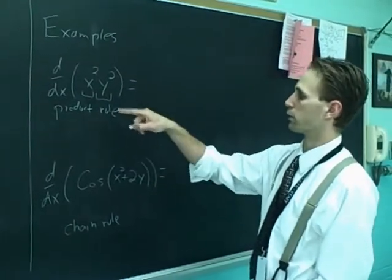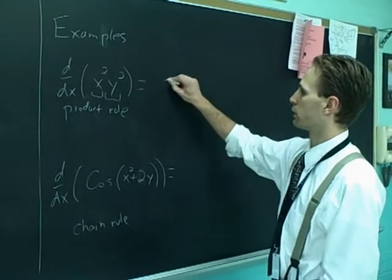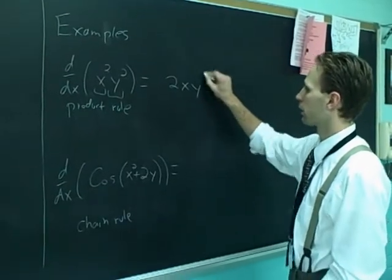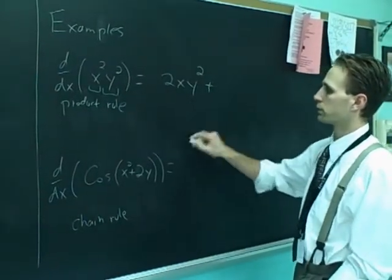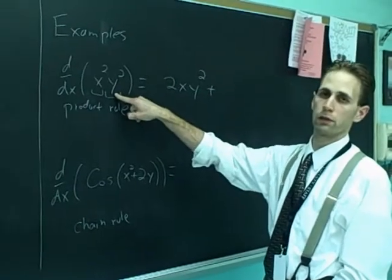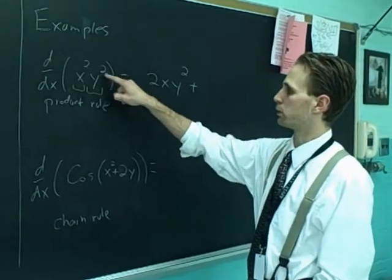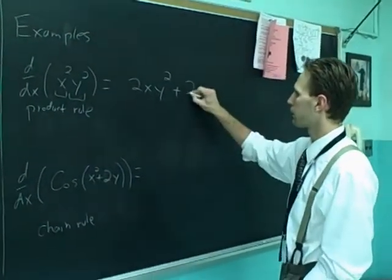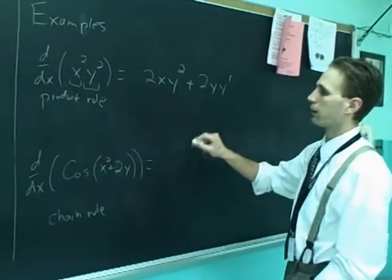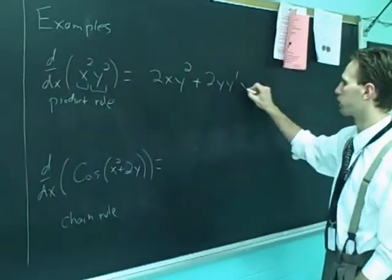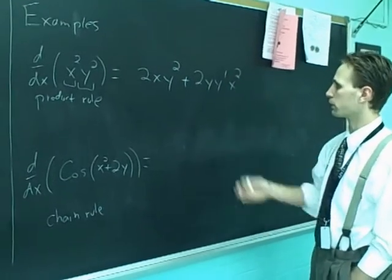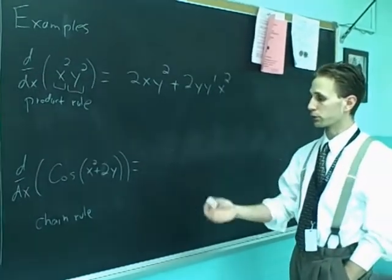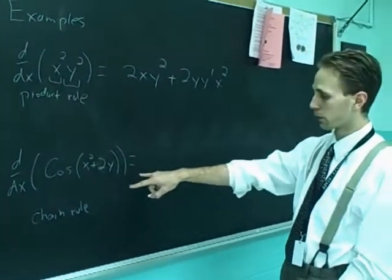And the derivative of the product is f prime g. So that's going to be 2x y squared plus g prime. For g prime, you need the chain rule. So that's going to be 2y y prime. And to complete the product rule, multiply that by x squared.